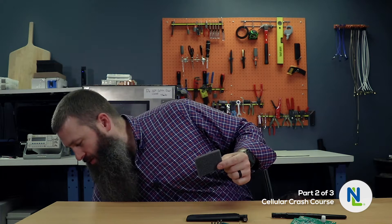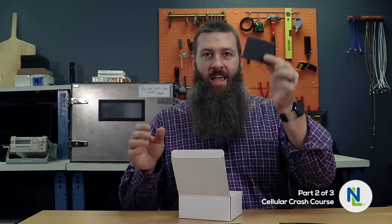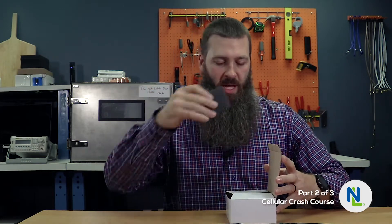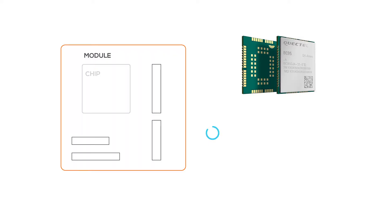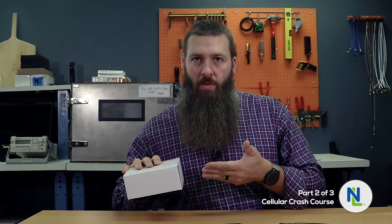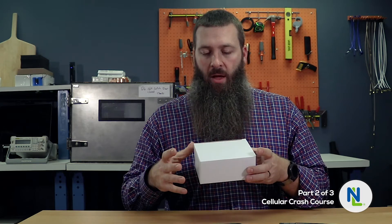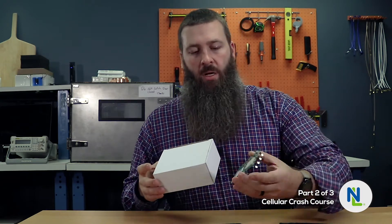So what most folks will do is use a module — yes, this is our module. A chipset has to go through testing, certifications, and approvals, and then a module manufacturer will take that approved chipset and put it in their module, adding things like an applications processor, GNSS radios, and software to offer something more user-friendly. It requires less RF expertise and less embedded expertise — still quite a bit, but not as much as developing at the chipset level. You pay a little more for the hardware but have less overhead bringing a module-based device to market.